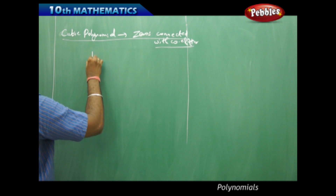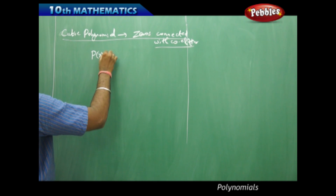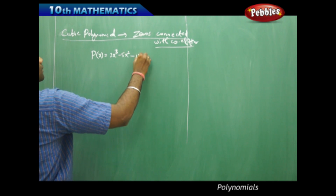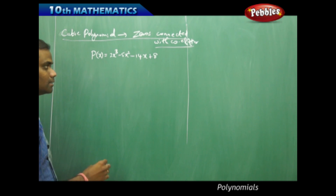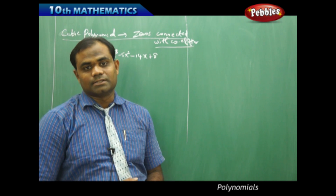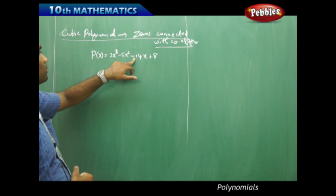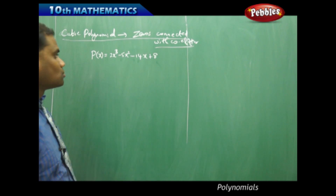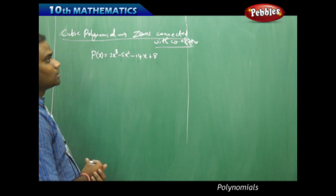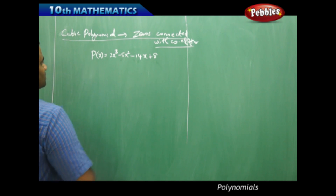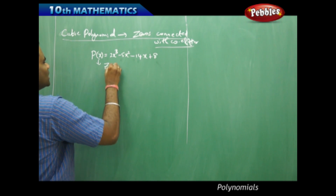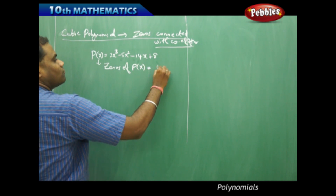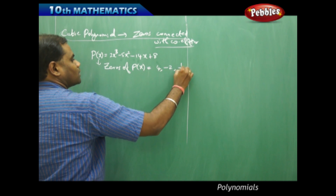My example cubic polynomial is 2x cubed minus 5x squared minus 14x plus 8. The coefficients of this cubic polynomial are 2, minus 5, minus 14, and 8. With these coefficients, let's see what the roots are. The zeros of p(x) are 4, negative 2, and 1 over 2.